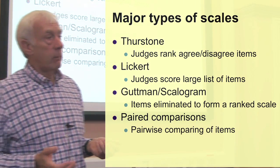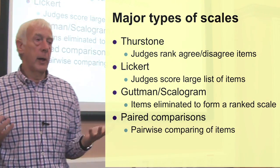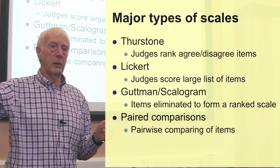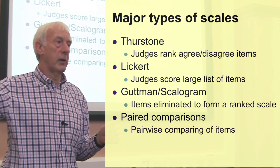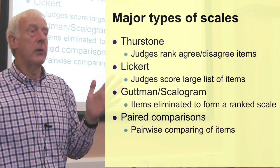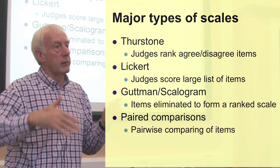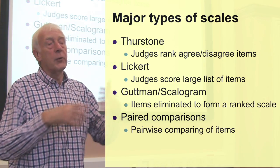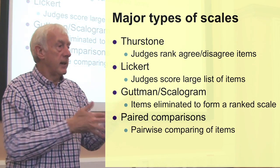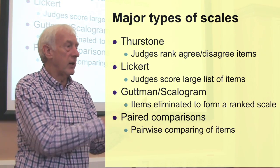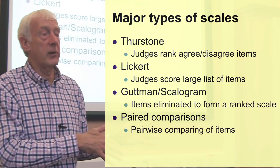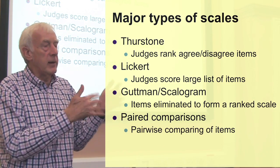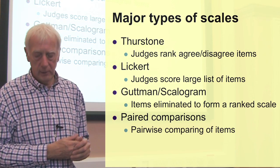A Likert scale — which you're most familiar with — is where you have strongly agree, agree, neutral, disagree, strongly disagree, and so on. You tick it for each statement, and the combination of the statements is added up to give you an overall score. The hard work comes in getting those statements — back to my student with her hundred statements. That was the difficulty, going through all that process and narrowing it down to just the 20 she actually used.